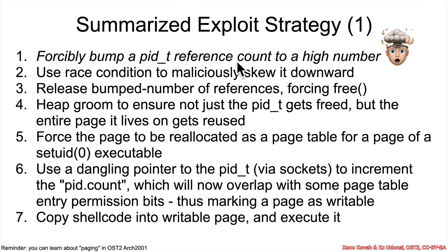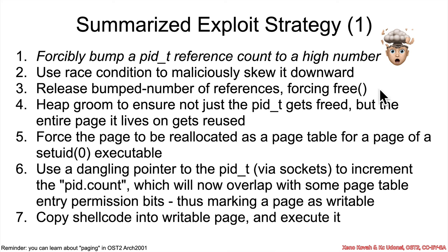So the attacker bumps the PID count reference counter higher. Then it uses the race condition to maliciously skew it downwards, because the slave was not getting locked, so there could be this decrementing which would over-decrement. If you push it high and then run the race multiple times to over-decrement, it'll go low. Then once you release all of the references that caused the reference count to go up in step one, that release will eventually cause it to go down to zero and it will free, because it had been skewed down lower.